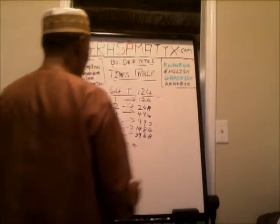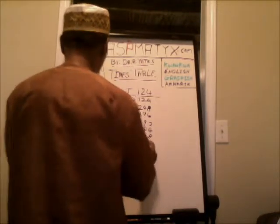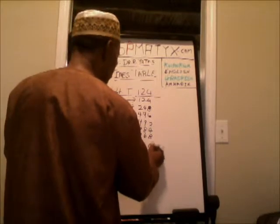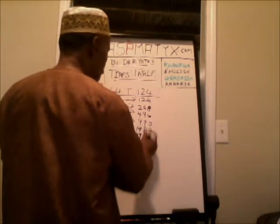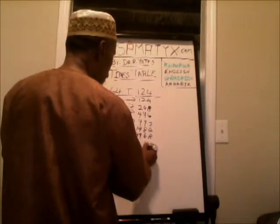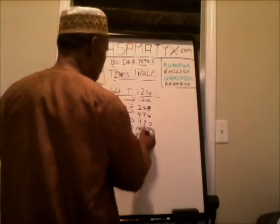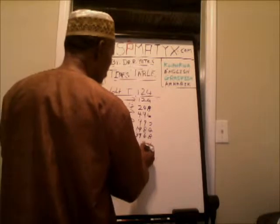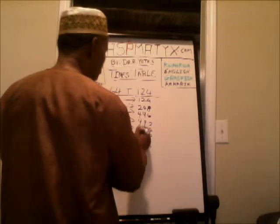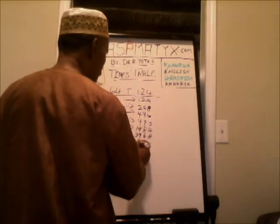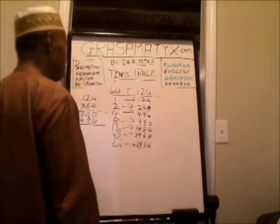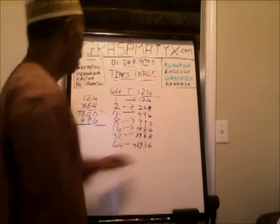Now when we double this now, here's what we should get. 8 plus 8 is 1, 6. 6 plus 6 is 1, 2, and 1 makes 1, 3. 9 plus 9 is 1, 8, and 1 makes 1, 9. 6 plus 3 is 6, and 1 is 7. This should be my answer: 7, 9, 3, 6.